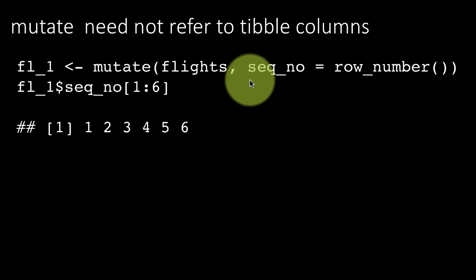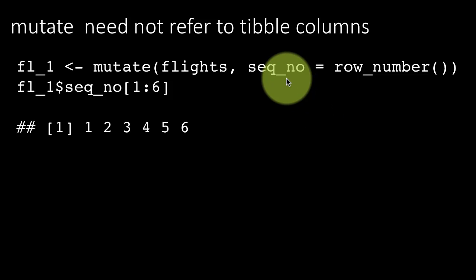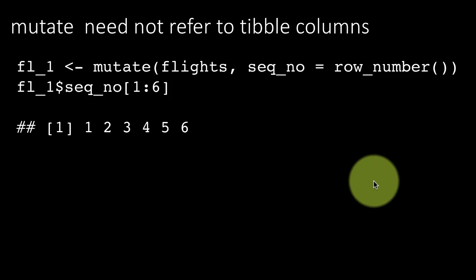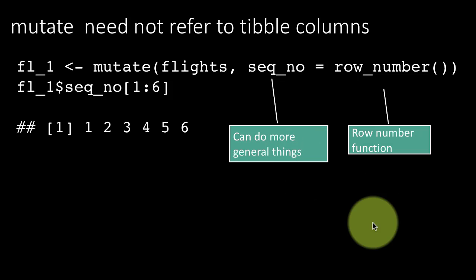I'm just showing it as an example that you can create a new column in whatever form, using whatever method that is required for the context. You don't have to create a new column only based on existing columns. And you can do more general things as well. That's what we are trying to point out here. And we're using the row_number function.